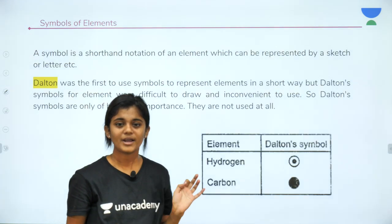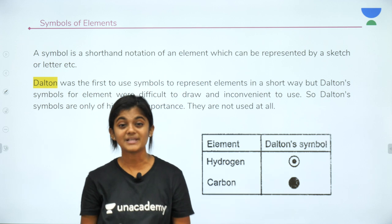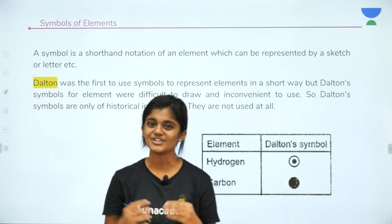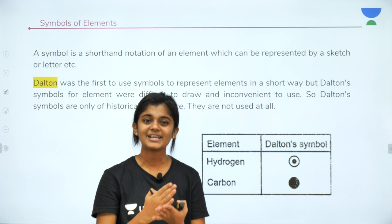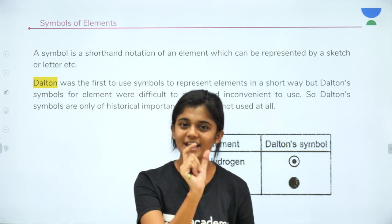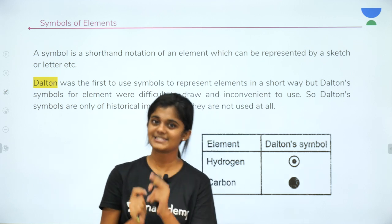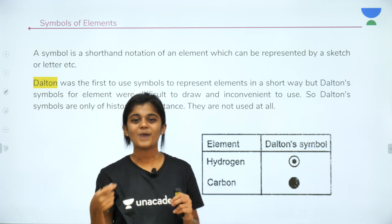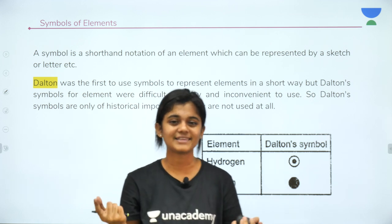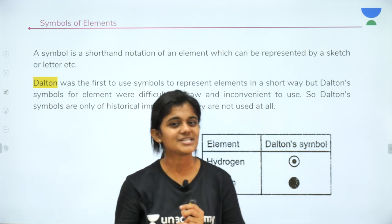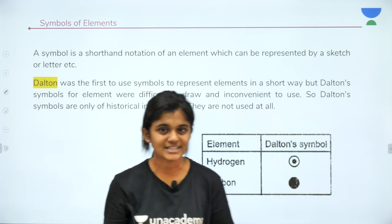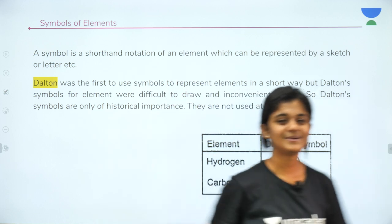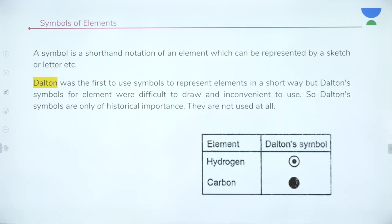Next we will look at the symbols of elements, but we'll start that from the next class because symbols are very interesting. A symbol is taken from the name of an element — sometimes from the first letter, and if two elements share the first letter, then the first and third letters are used. It will be very interesting to see how the symbols in the periodic table evolved. We'll cover all of this in the next lecture. If you liked this lecture, please like, share, and don't forget to watch all the videos of Unacademy Foundation. See you soon!